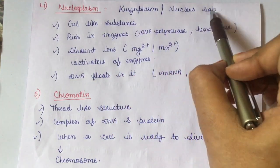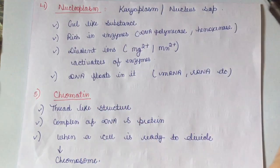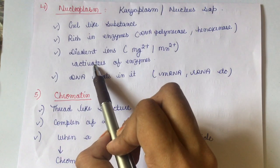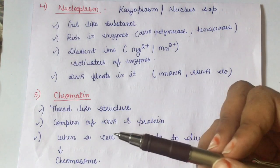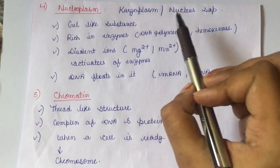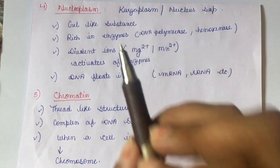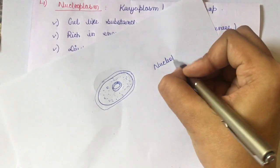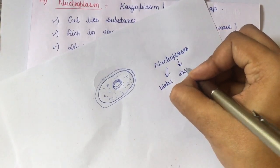Nucleoplasm is also called karyoplasm or nuclear sap. It is a gel-like substance rich in enzymes such as DNA polymerase and hexokinase. It also contains divalent ions like magnesium and manganese, which are activators of enzymes and DNA. DNA, messenger RNA, and ribosomal RNA all float in the nucleoplasm. It is rich in enzymes required for replication and transcription, is enveloped by the nuclear envelope, and is a type of protoplasm similar to cytoplasm. It contains water, dissolved ions, and enzymes.